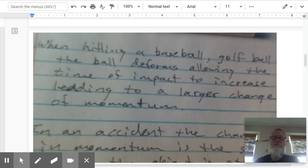Because the baseball deforms, it actually wraps around the bat, increasing the time of collision. So you get a much bigger change in momentum, and the baseball, the golf ball, the tennis ball, etc., will leave with a much greater velocity.